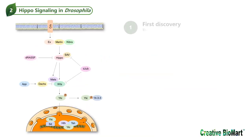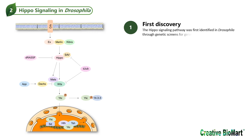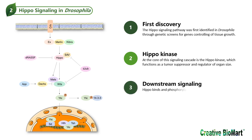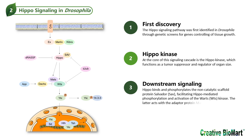Hippo Signaling Pathway in Drosophila. The Hippo signaling pathway was first identified in Drosophila through genetic screens for genes controlling tissue growth. At the core of this signaling cascade is the Hippo kinase, which functions as a tumor suppressor and regulator of organ size. Hippo binds and phosphorylates the non-catalytic scaffold protein SAV, facilitating Hippo-mediated phosphorylation and activation of the Warts kinase. The latter acts with the adapter protein Mats by direct binding.